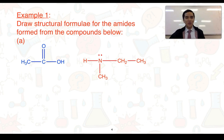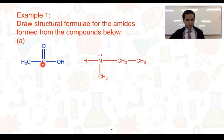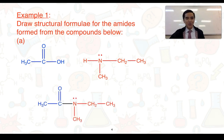For example one, we're going to look at drawing the structural formulae for the amides formed from the compounds below. In blue, we can see we've got a carboxyl functional group, and in red, we can see we've got an amino functional group. We've aligned the molecules so that these three atoms will be eliminated as a water molecule, and then we simply join this carbon to that nitrogen to form the amide.